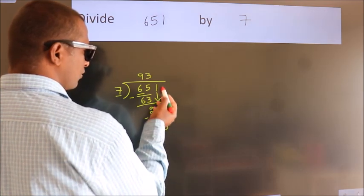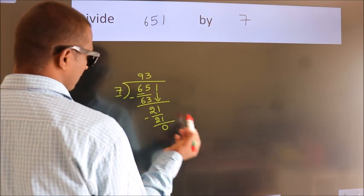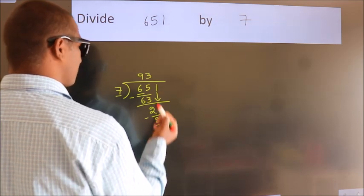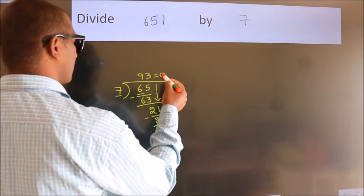After this, no more numbers to bring it down. And we got remainder 0. So this is our quotient.